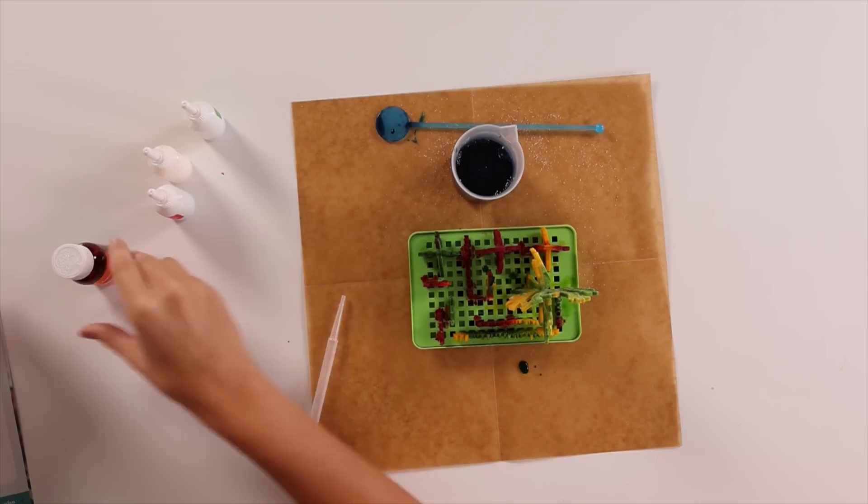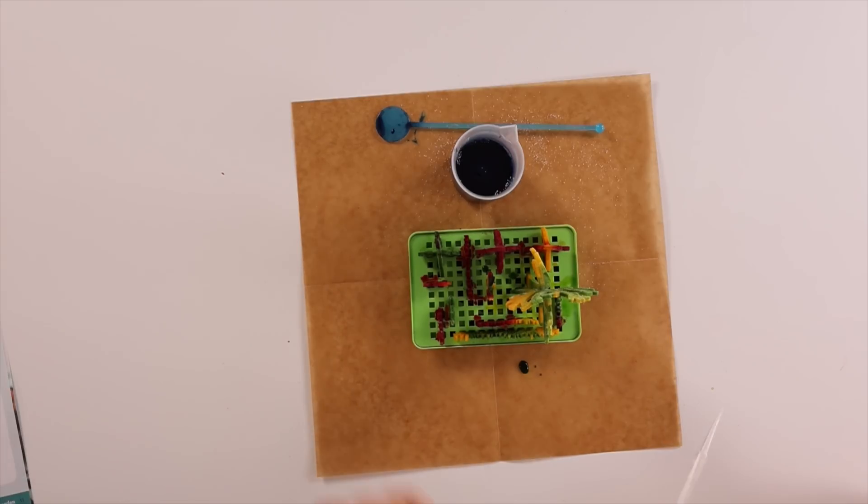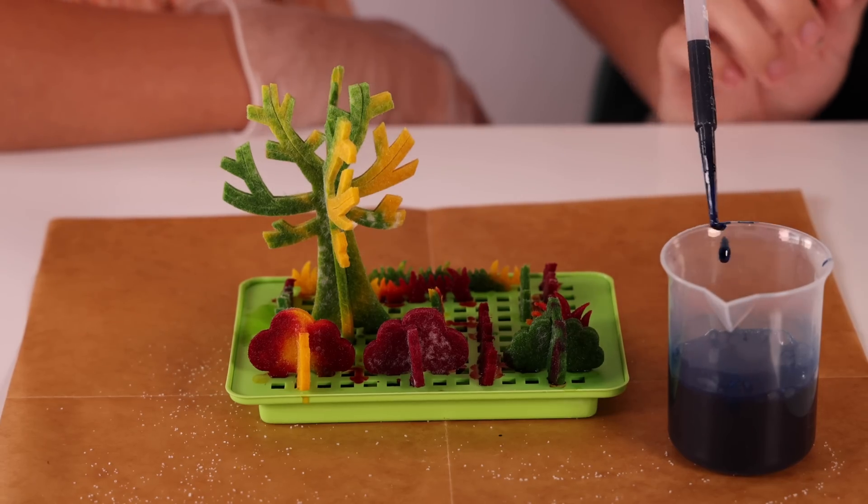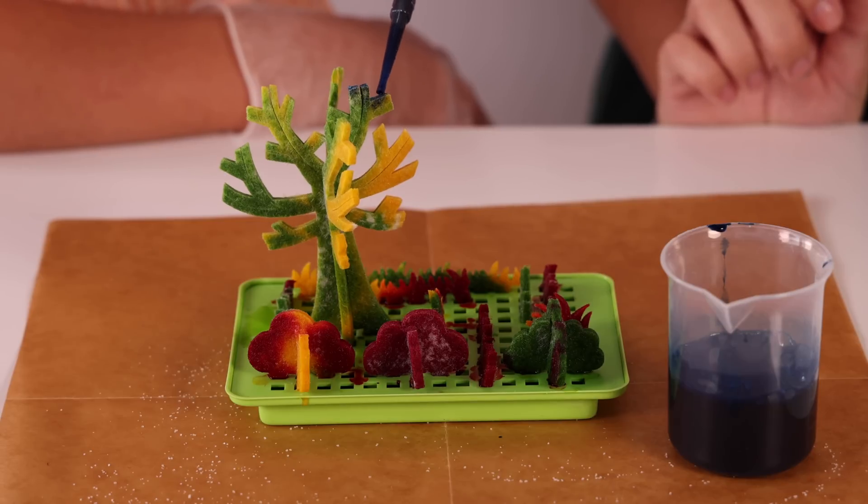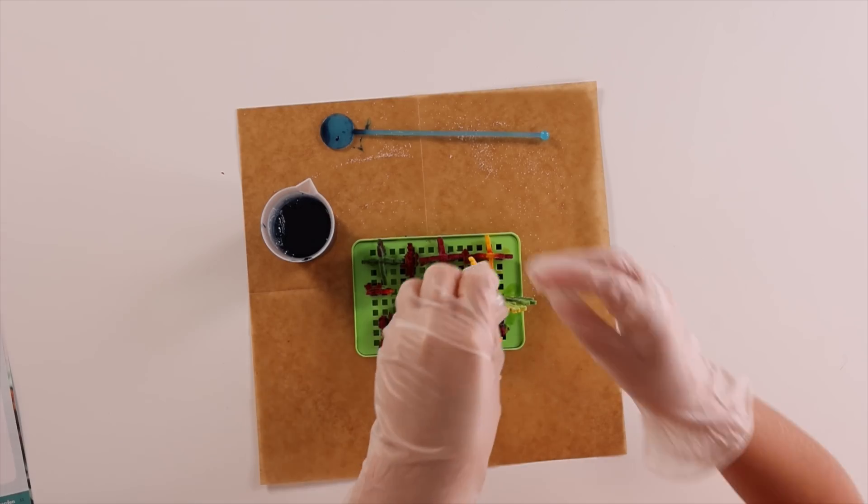Now we're going to take our pipette. This is a pipette. So we're going to put the pipette into the liquid. Alright. So we're going to want to cover every single one of the plants with the blue liquid. We want it to be completely covered. So you can kind of be a little bit heavier handed. And this is how we're going to make the crystals.